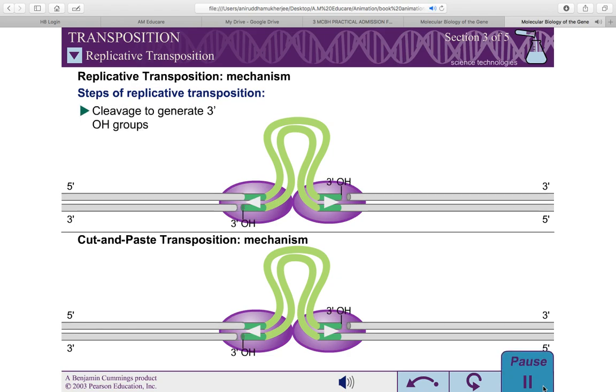Next, the transposase subunits introduce nicks in the 3' ends of the transposon strands. However, in contrast to cut-and-paste transposition, the transposon DNA is not excised from its initial location.